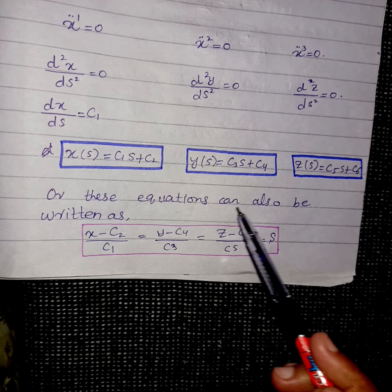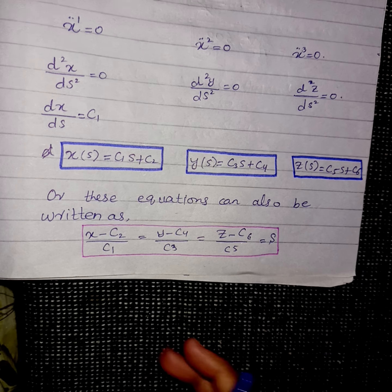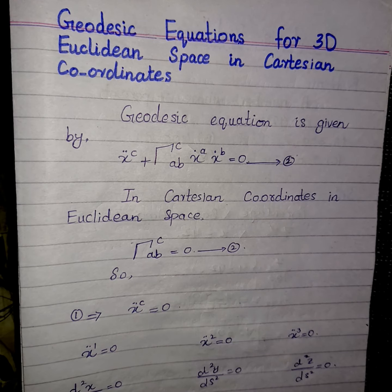So we can also write these equations as shown here, and these are known as the geodesic equations for three-dimensional Euclidean space in Cartesian coordinates.